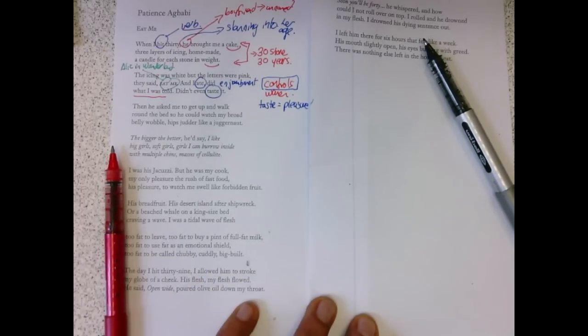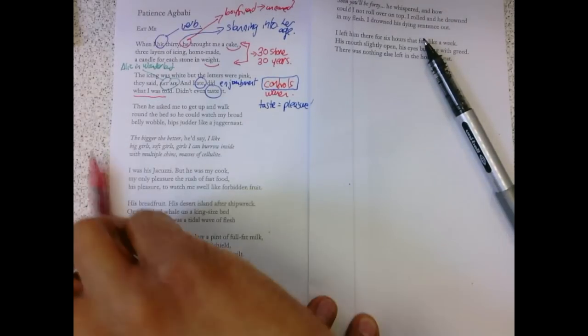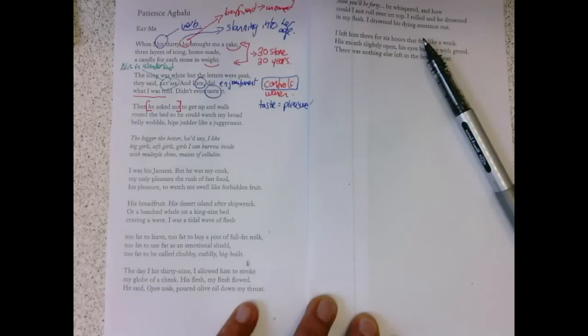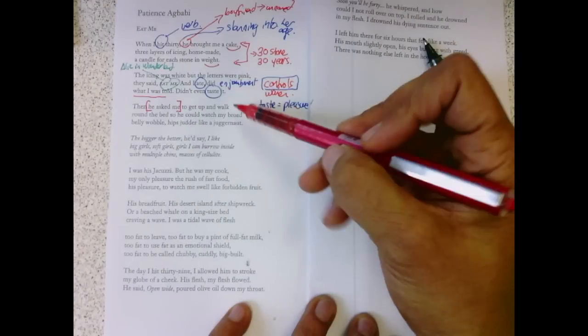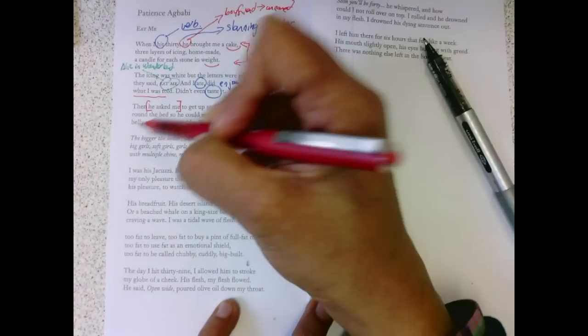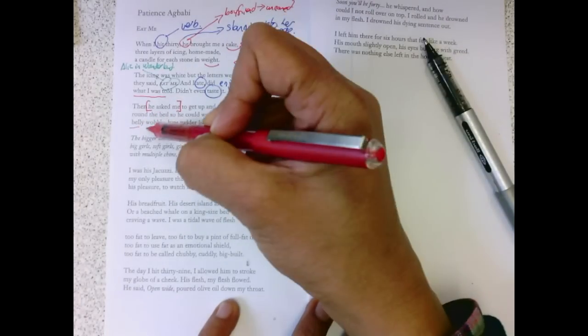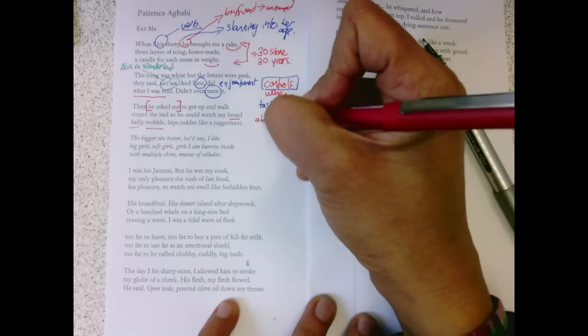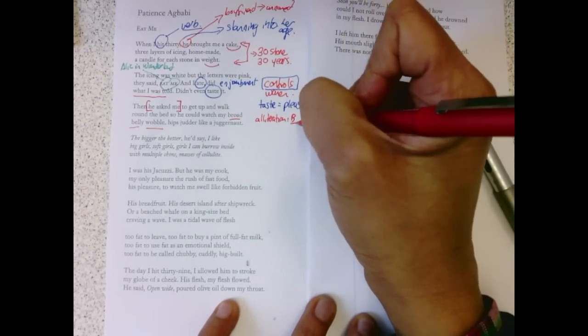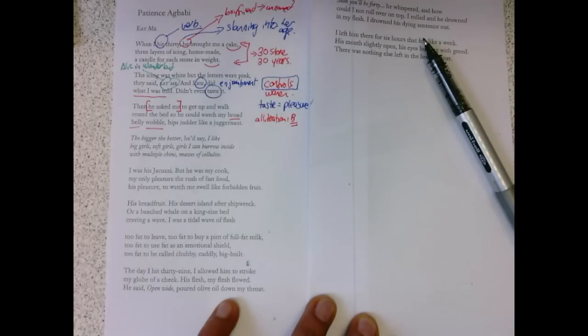Then he asked me to get up and walk. Well, that's strange that he asked me, he didn't order. Because sometimes having control of someone isn't just about telling them what to do. You want to feel that maybe they have options. To get up and walk around the bed so he can watch my broad belly wobble.